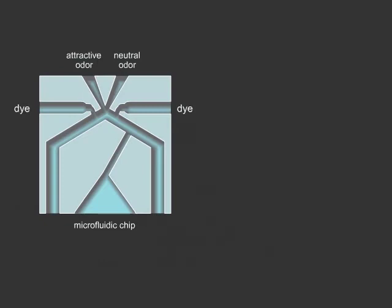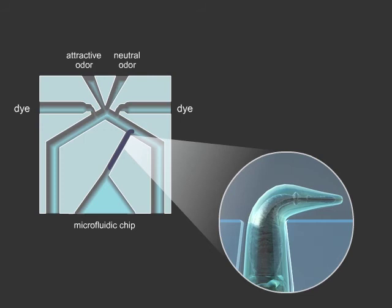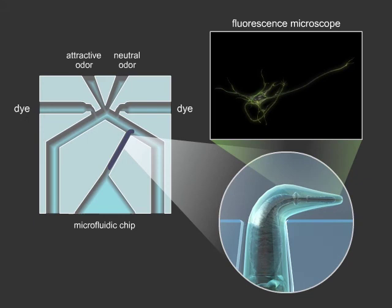While a worm is immobilized, a specially designed microfluidic chip exposes the worm's nose to a flowing stream of test solution. Typically, when a neuron is activated, the concentration of calcium increases inside the neuron, causing the calcium sensor to activate. The fluorescence microscope allows us to observe fluctuations in neuronal activity.